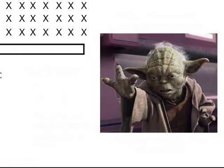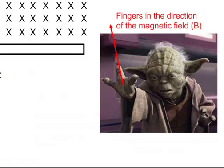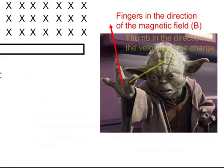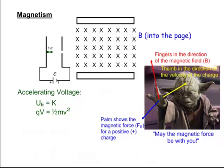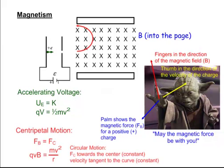We're going to have Yoda demonstrate our right-hand rules. Your forefingers point in the direction of the magnetic field — which here is into the page. Your thumb points in the direction of the velocity of the charge or current. So with fingers going into the page and thumb pointing to the right, the palm of your hand shows the magnetic force direction. For a positive charge the palm shows you where the force is; for a negative charge, the back of the hand shows the force. With fingers into the page and thumb to the right, your palm points up.